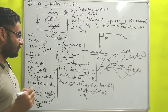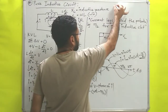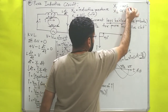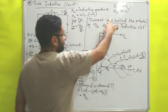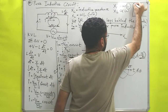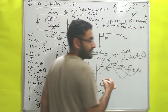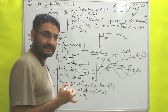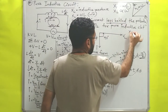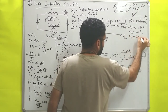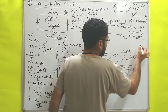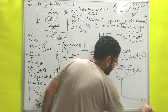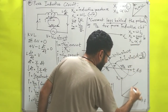From the inductive reactance equation XL equals omega L: since L is constant, XL is directly proportional to omega. The graph of XL versus omega is a straight line, meaning if angular frequency increases, inductive reactance also increases. Similarly, XL equals 2 pi f L, and since 2 pi and L are constants, XL is directly proportional to frequency f. The graph of XL versus frequency is also a straight line.